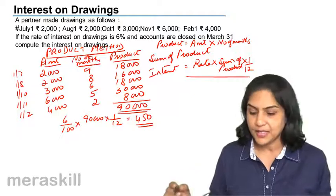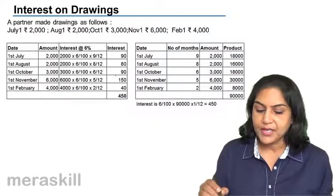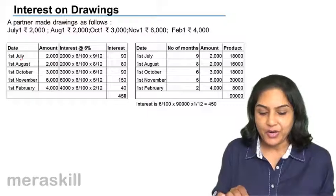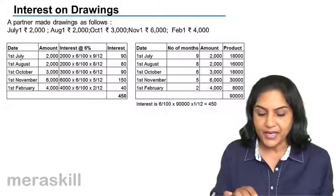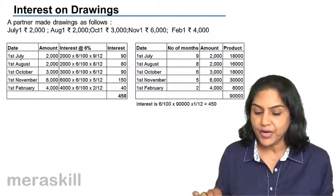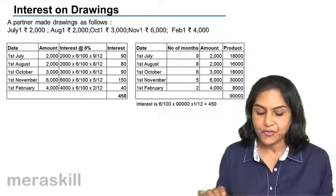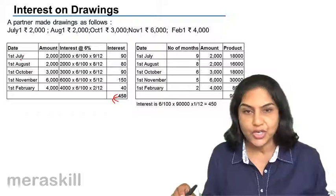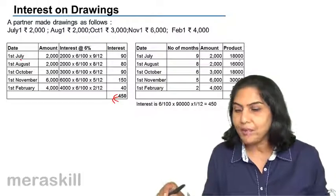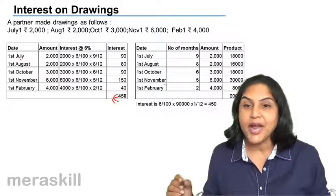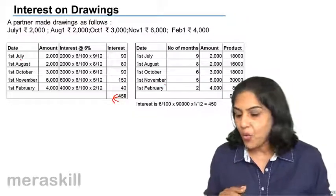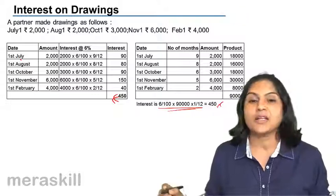We'll go through a neater presentation of both methods. 1st July: 2,000 drawn, 6% for 9 months, interest = 90. August: 2,000 withdrawn, interest = 80. 1st October: 3,000 withdrawn, 6% gives 90. 1st November: 150. 1st February: total 450. Using the product method: take the number of months for which interest is due, multiply by the amount, arrive at the product, sum the products, and interest equals this sum multiplied by the rate percent for 1 month — giving us the same answer of 450.